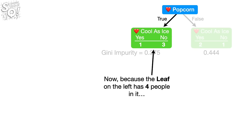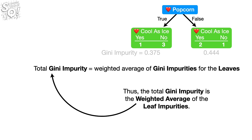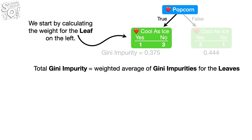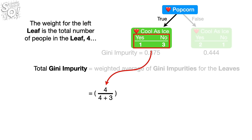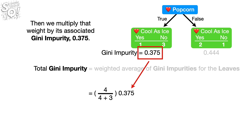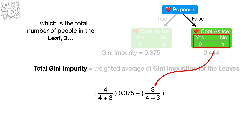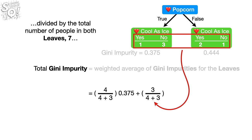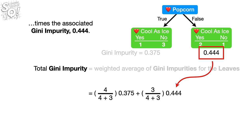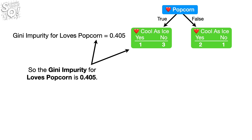Because the leaf on the left has 4 people and the leaf on the right has only 3 people, the leaves do not represent the same number of people. Thus, the total Gini impurity is the weighted average of the leaf impurities. The weight for the left leaf is 4 divided by 7, multiplied by its Gini impurity of 0.375. Then we add the weighted impurity for the right leaf: 3 divided by 7, times 0.444. When we do the math, we get 0.405. So the Gini impurity for Loves Popcorn is 0.405. Likewise, the Gini impurity for Loves Soda is 0.214.